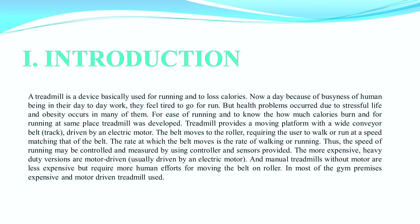A treadmill produces a moving platform with a wide conveyor belt, also known as a track, driven by an electric motor. The belt moves the roller, requiring the user to walk or run at the speed matching that of the belt. The speed of running may be controlled and measured using a controller and sensor. More expensive, heavy-duty versions are motor driven, while manual treadmills without motors are less expensive but require more human effort.